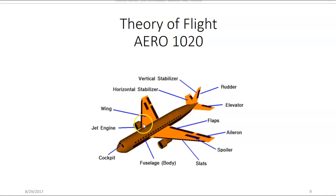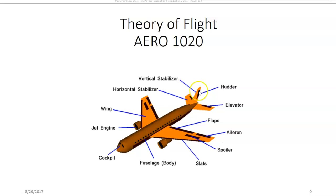The wings are another important part. The tail section, which is known as the empennage, includes the horizontal stabilizer and the vertical stabilizer. On the aft section of the horizontal stabilizer, you'll have the elevators. The elevators control movement around the lateral axis — in other words, it controls pitch. The rudder is attached to the aft section of the vertical stabilizer, and that controls movement around the vertical axis. That movement is called yaw.